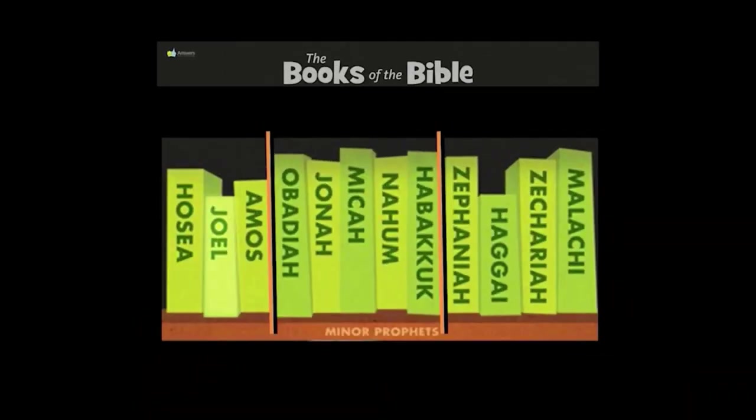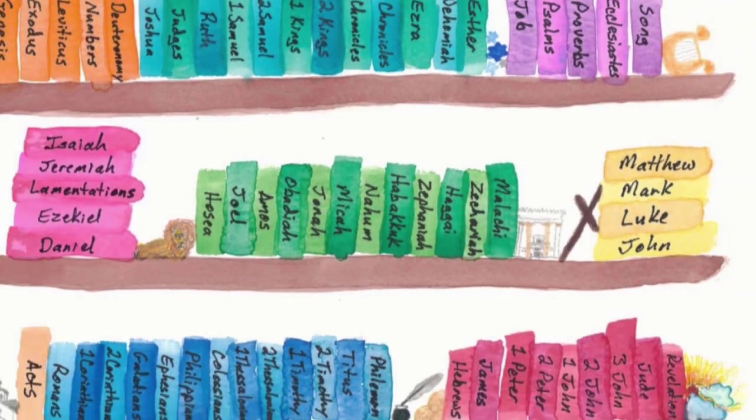Attention. Present Bibles. Zephaniah. Start. Habakkuk, Zephaniah, Haggai, Zechariah. Hosea, Joel, Amos, Obadiah, Jonah, Micah, Nahum, Habakkuk, Zephaniah, Haggai, Zechariah, Malachi. These are the books of the Minor Prophets.